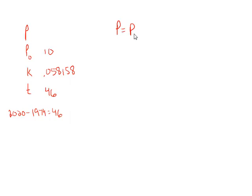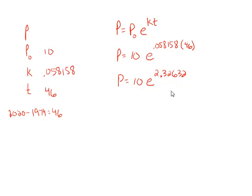Using the same formula, p equals p₀e^(kt). We're going to substitute 10 for p₀, 0.058158 for k, and 46 for t. By calculator, if you have the right calculator, you can plug it in as you see it. But in general, it's a decent idea to multiply the exponent first, and that's going to be 2.32632. Raise e to that power, multiply it by 10, and we find that p is approximately 102. So that's going to be $1.02. In 2020, look it up and let me know.